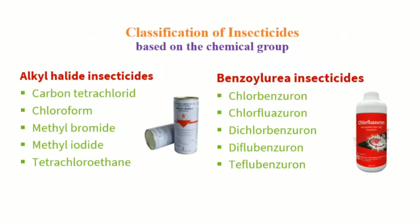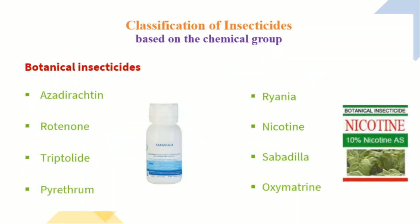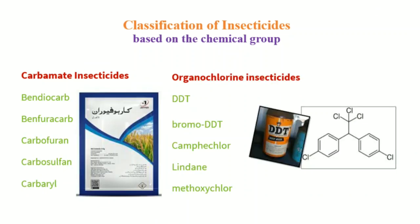Next is classification of insecticides based on the chemical group. Alkyl halide insecticides include carbon tetrachloride and chloroform. Benzoyl urea insecticides include chlorobenzuron and chlorofluazuron. Botanical insecticides include rotenone, pyrethrin, and nicotine. Carbamate insecticides include bendiocarb, carbofuran, and carbaryl.